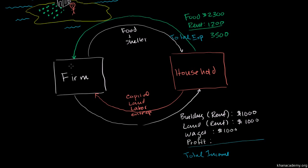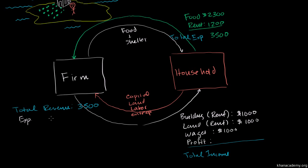What is the total revenue the firm is getting? The firm is getting $2,300 for the food and $1,200 for the rent, giving total revenue of $3,500 per year — everything here is on an annual basis. And what are the firm's expenditures? Here we're thinking in terms of economic profit, because we're really just thinking about how much money is coming out of this business.